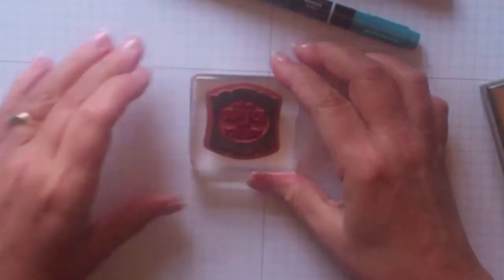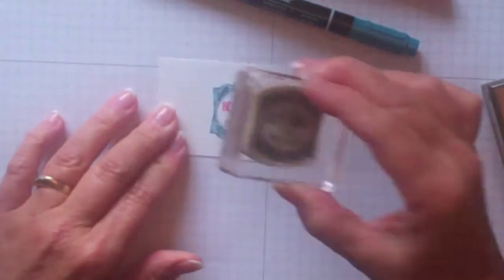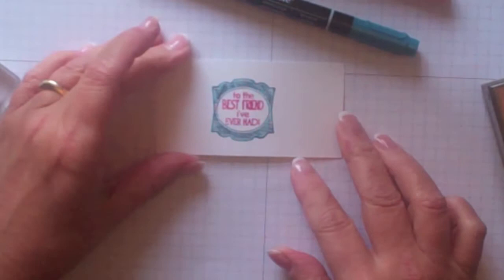Now I've got the two colors on there. I want to go ahead and just stamp it on a piece of whisper white cardstock. There we go. So that's how you get the two colors.